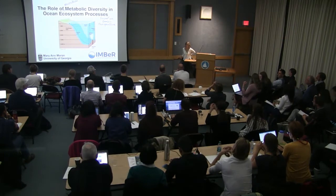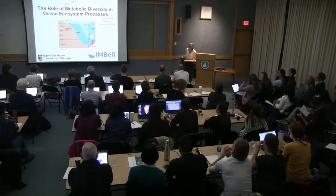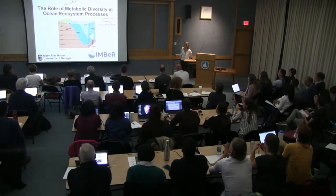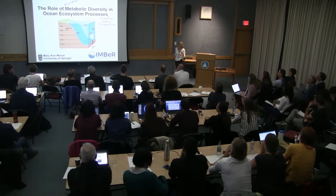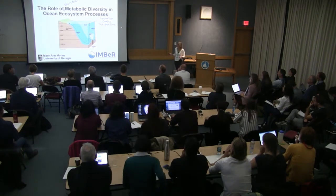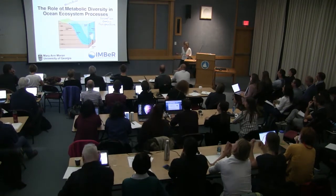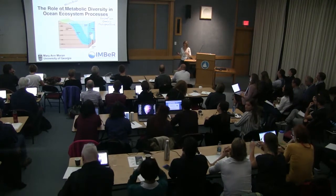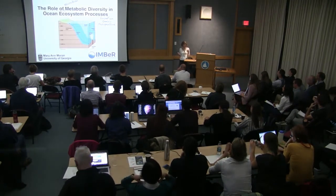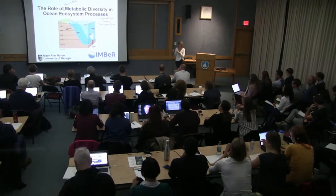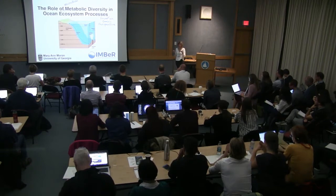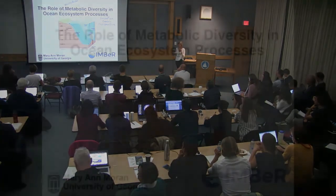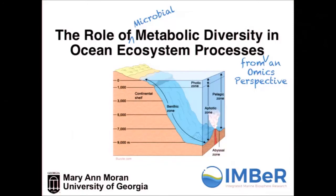So this is obviously a really huge topic — the role of metabolic diversity in ocean ecosystem processes. I thought, well, I can narrow it down a little bit because I'm really just speaking about microbial, but then I realized that didn't narrow it down very much. I am going to look at it from a perspective of omics techniques or technologies, fitting in with one of the themes of the second workshop. If we go out there and we're sequencing genes and transcripts and proteins, what can that add to our understanding of how metabolic diversity interacts with ecosystem processes?